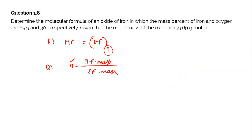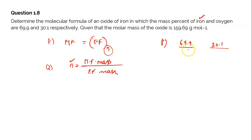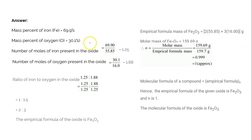Now let's calculate it. To find the empirical formula there are three steps. Step one: take the percentage mass — 69.9 for iron and 30.1 for oxygen — and divide each by the atomic mass of that element. So divide 69.9 by the atomic mass of iron, and divide 30.1 by the atomic mass of oxygen. The resultant values are 1.25 (for iron) and 1.88 (for oxygen). Step two: identify the least value, which is 1.25.